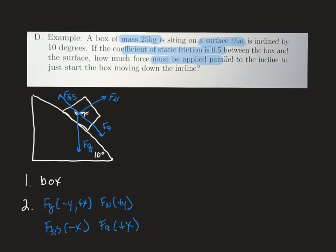Step three is to draw our free body diagram. Force normal is going to be in the positive y direction, force applied is going to be in the positive x direction, the force due to gravity is in the fourth quadrant, and the force of friction is going to be in the negative x direction.